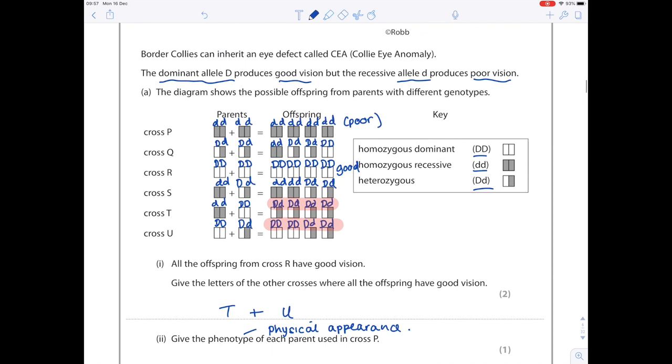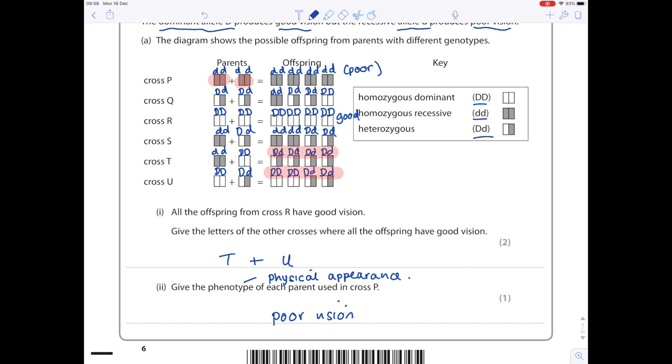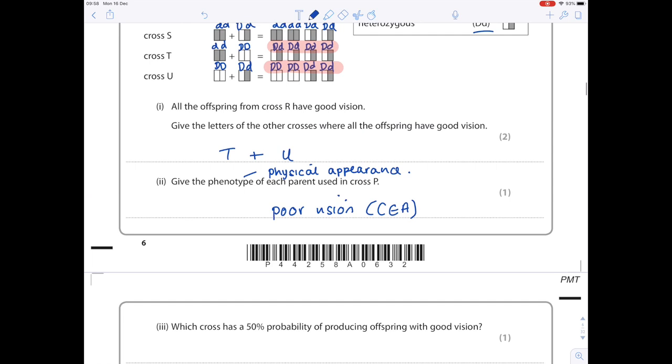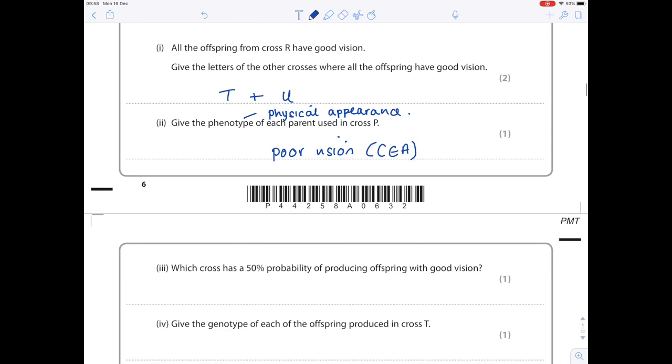Looking at cross P according to my notes, small d small d is poor vision, so I'm just going to write that. What was that disease called? CEA. Just keeping my answer nice and full here because the mark scheme may want me to have written the name of the disease. Which cross has a 50% probability of producing offspring with good vision? It's definitely not cross P because we know they're all poor vision. Looking at cross Q, that's poor vision, good vision, good vision, good vision - so not 50%. We've already said R is all good. Now looking at S, we've got poor vision, poor vision, good vision, good vision, so that is a 50% chance. We know T and U were both good, so the answer is S.